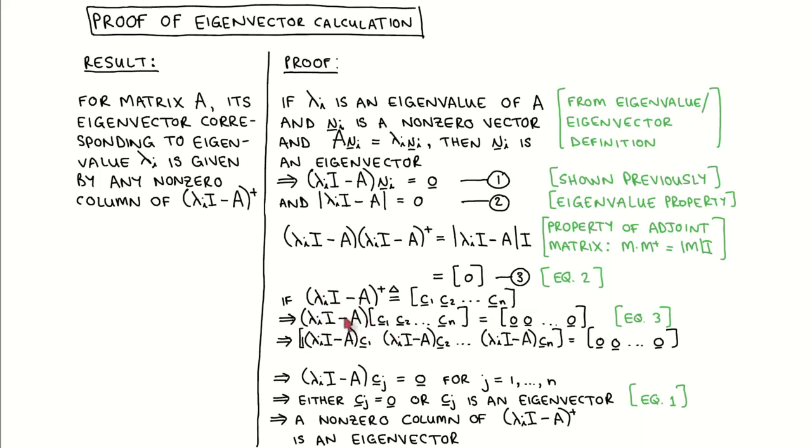Now we multiply matrix lambda I times I minus A with each of the columns, producing this line. If we compare each column on the left-hand side with the corresponding column on the right-hand side, we see that each column has to satisfy this condition.